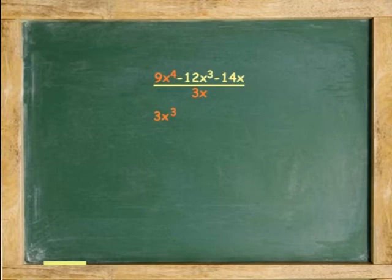In the second term, negative 12 divided by 3 equals negative 4, and one x gets cancelled. In the third term, negative 14 divided by 3 is negative 4.6, and the x's get cancelled. Answer: 3x cubed minus 4x squared minus 4.6.